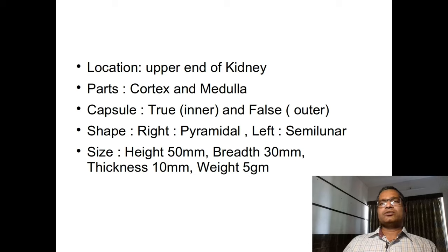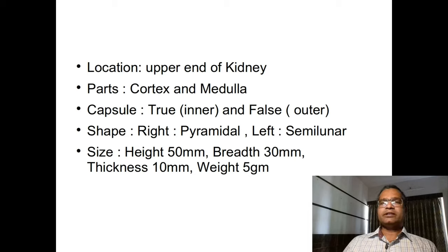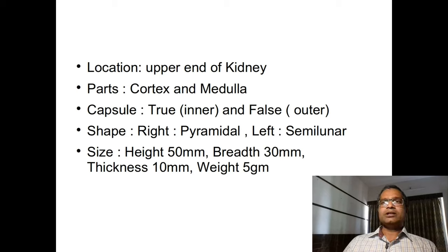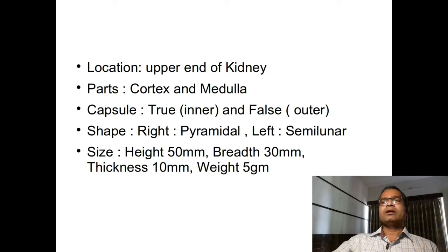There is an inner true capsule formed by condensation of fibrous stroma of the suprarenal gland, and an outer false capsule formed by the renal fascia. The renal fascia, after covering the kidney, joins with itself in relation with the upper end of the kidney, then splits again to cover the suprarenal glands. These capsules again join above the suprarenal glands and attach to the diaphragm, forming the suspensory ligament for the suprarenal glands.